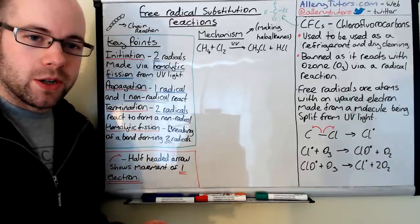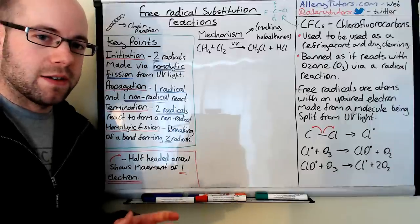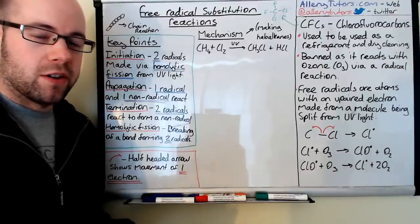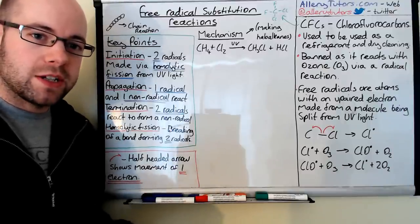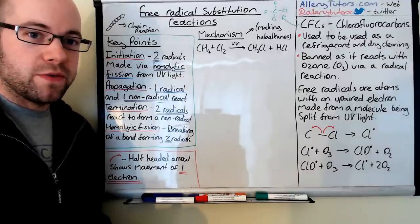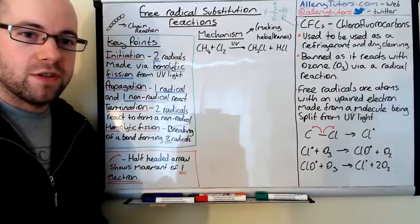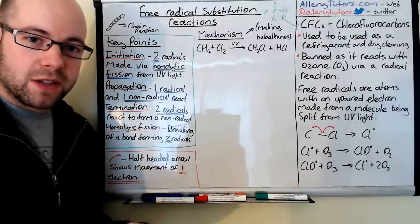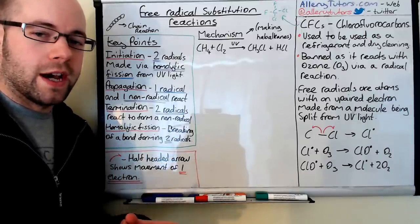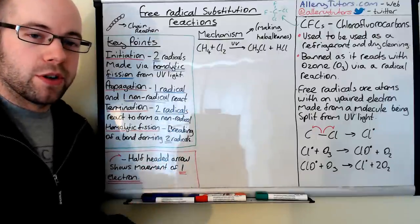We're going to start by looking at the word free radical. A free radical is just an atom that has one electron that is unpaired in its shell, and that was created from a molecule that was split using UV light or any source of high energy radiation. That's effectively what a free radical is.